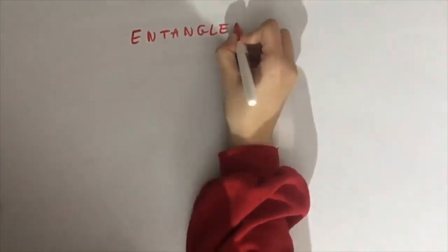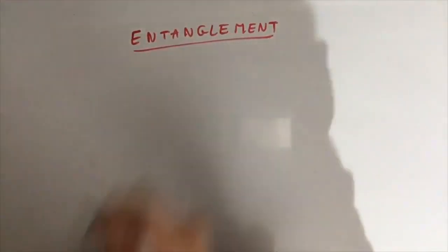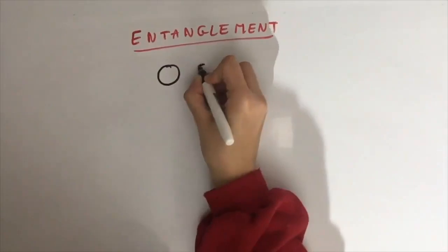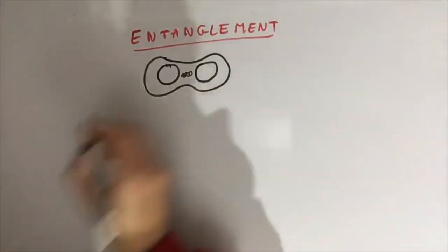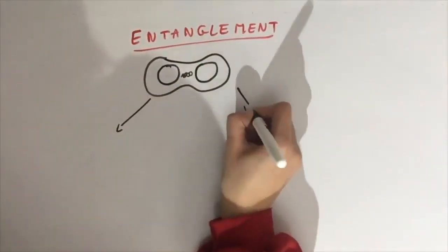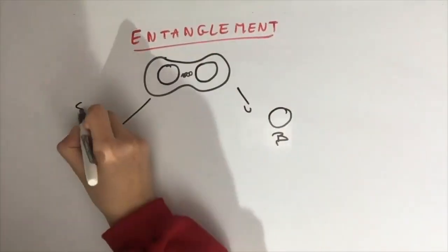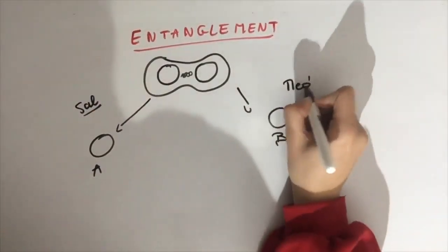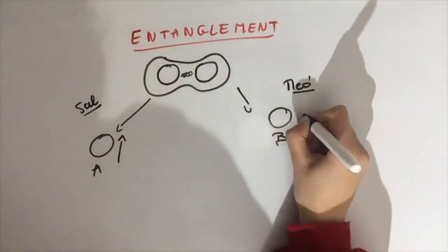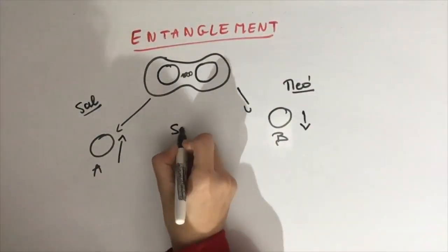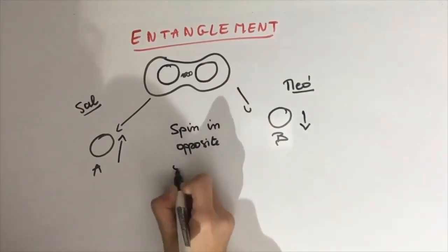This relies on entanglement. For example, if we have two particles that are photons and we entangle them, so they share the same quantum wave, and then we separate them to give us particle A and particle B. Cell has particle A and Med has particle B. If randomly we say that A spins up, then B spins down, because they spin in opposite directions.